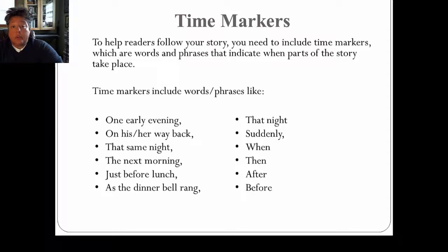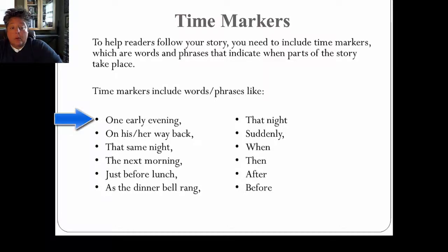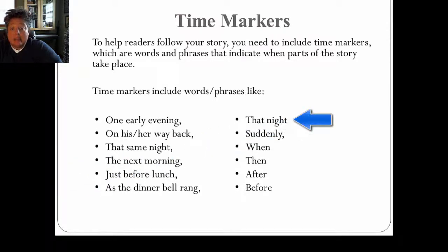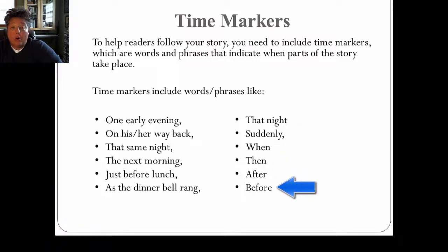Throughout your story, you also might want to use time markers. These help the reader follow your story — they are words or phrases that indicate when certain parts of your story take place. Time markers include words or phrases like: 'early one evening,' 'on his or her way back,' 'that same night,' 'the next morning,' 'just before lunch,' 'as the dinner bell rang,' 'that night,' 'suddenly,' 'when,' 'then,' 'after,' 'before,' 'later.'